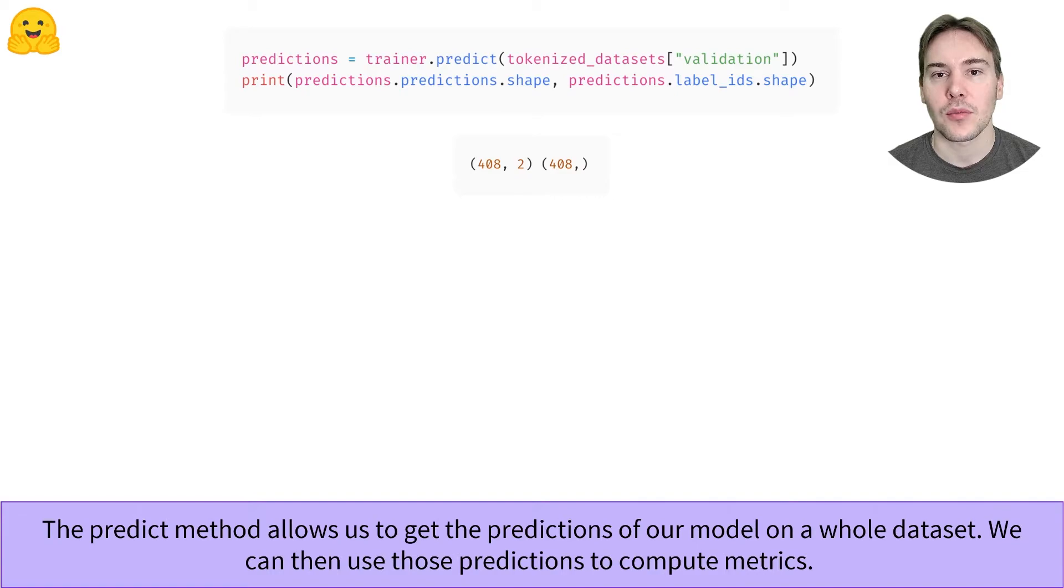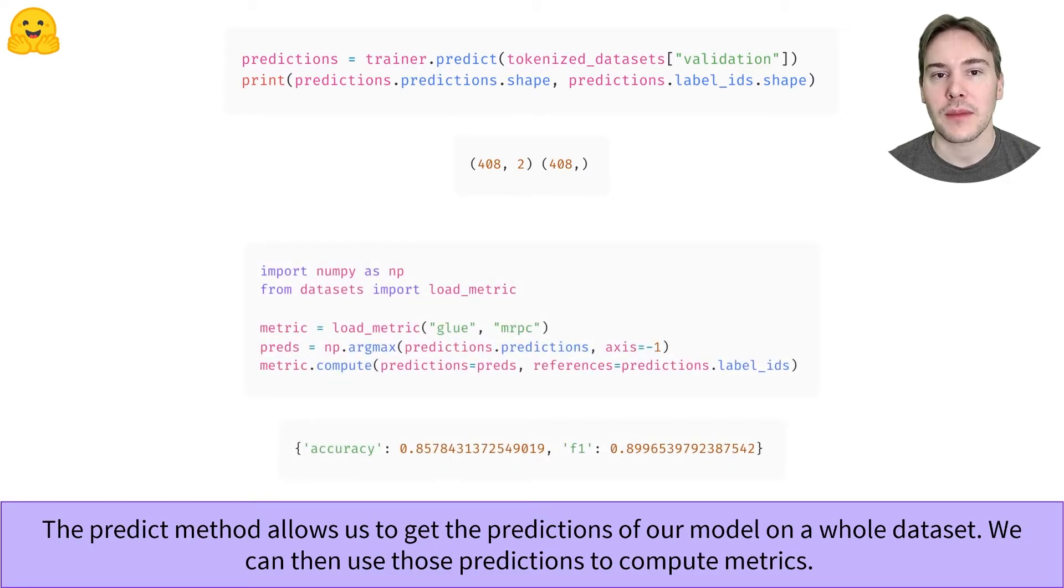The predictions are the logits of the model for all the sentences in the dataset, so a NumPy array of shape 408 by 2. To match them with our labels, we need to take the maximum logit for each prediction to know which of the two classes was predicted. We do this with the argmax function. Then we can use the metrics from the datasets library. It can be loaded as easily as the dataset with the load metric function, and it returns the evaluation metric used for the dataset. We can see our model did learn something, as it is 85.7% accurate.